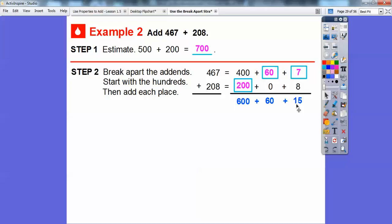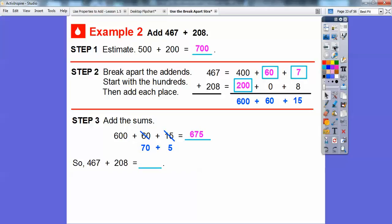Now, this 15 has 15 ones in it, or it has 1 ten and 5 ones. So what I'll do is I'll take this 10 right here and add it to this 6 tens and make it 7 tens, or 70. So now we have 600 plus 70 plus 5 gives us 675.